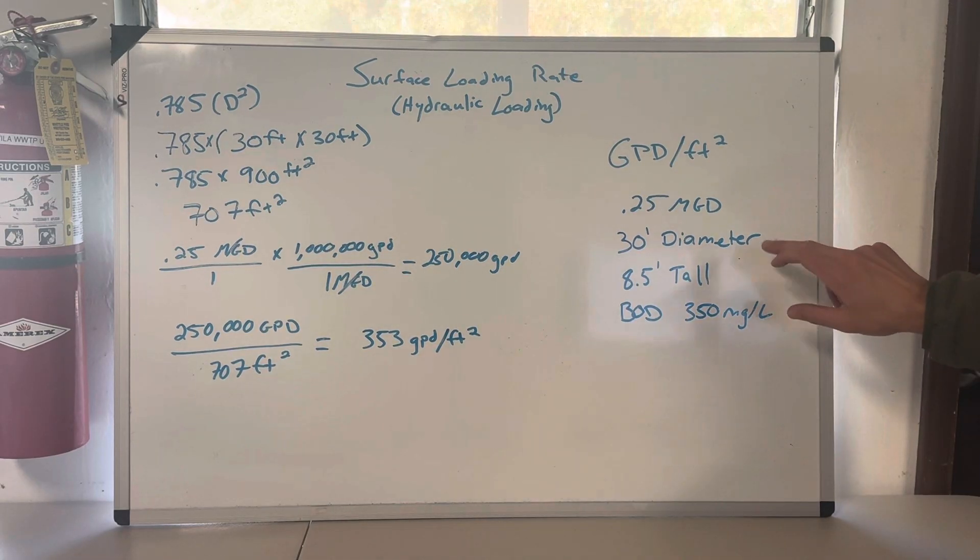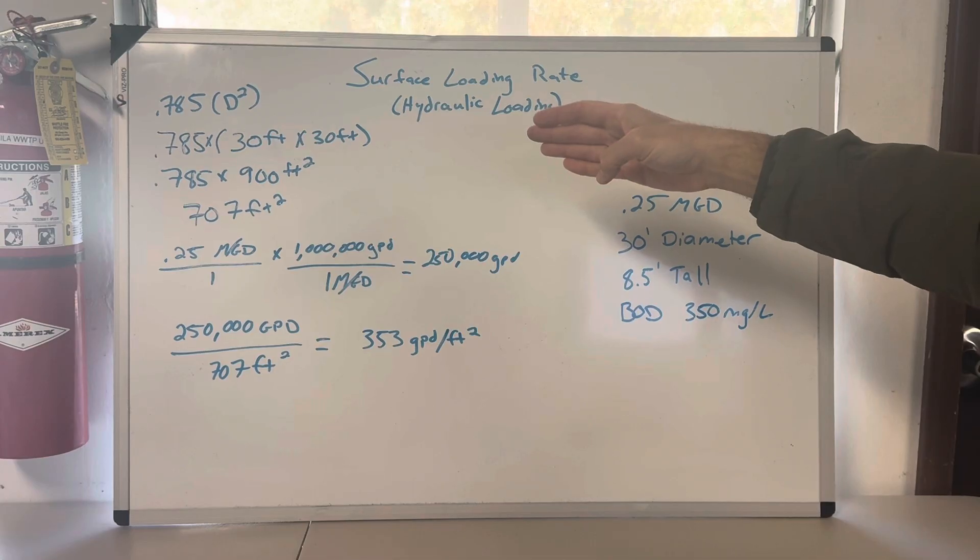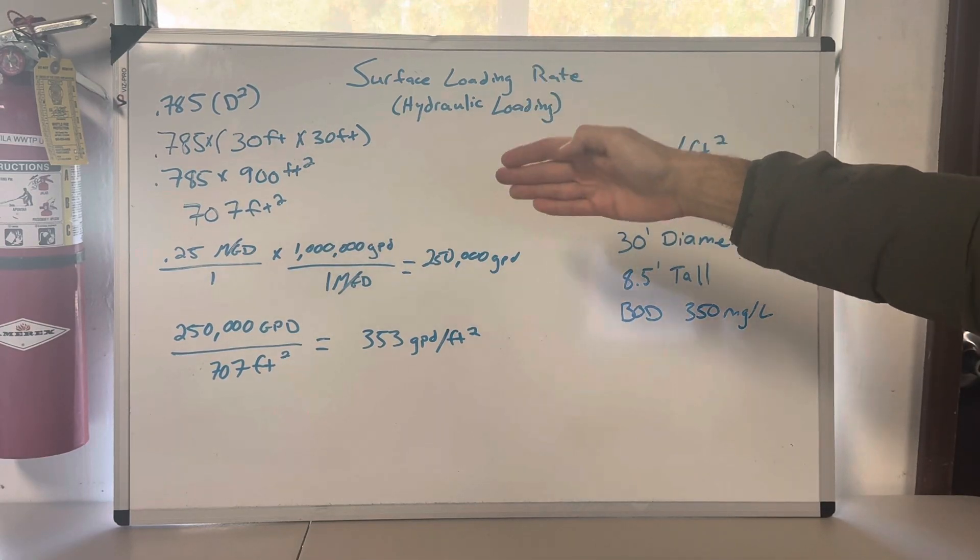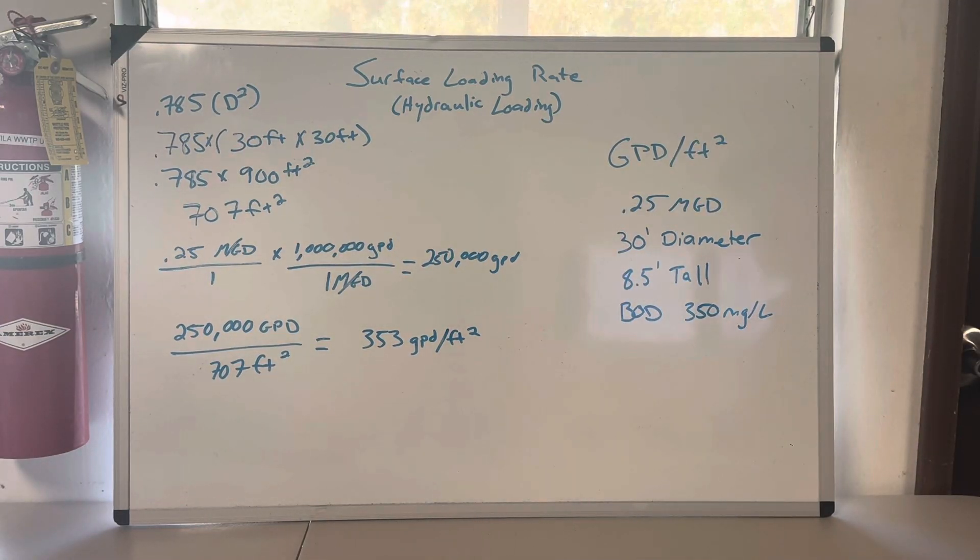The first thing I did is I converted 30 foot diameter to square feet. So that's 0.785 diameter squared, which is 0.785 times 30 foot times 30 foot. 0.785 times 900 feet squared gives us 707 square feet - that's the area of the clarifier. If you're confused on how I got that, please go check out my area video or ask questions down below. Happy to answer.